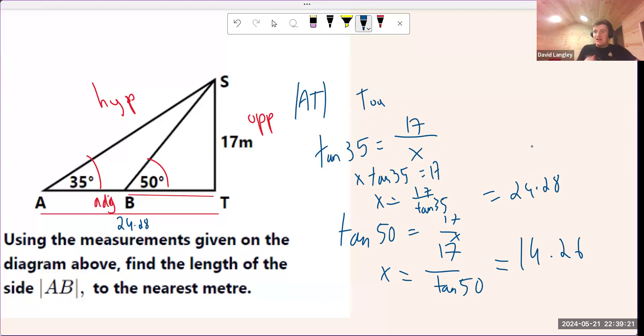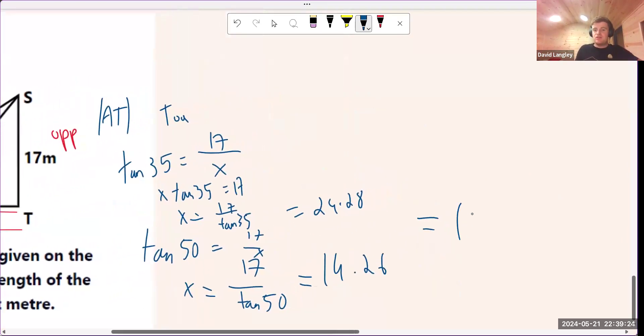And to find that bit left over AB, we're just going to subtract to the nearest meter. We're going to get 10 meters. Hopefully that's making sense. How do we use sine, cos, and tan, or SOHCAHTOA?